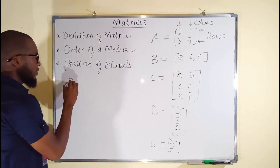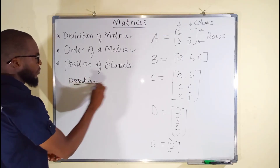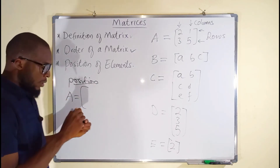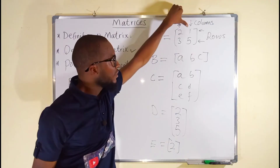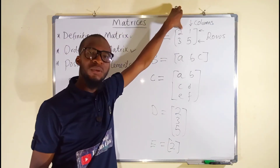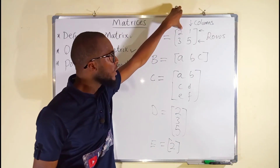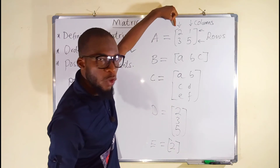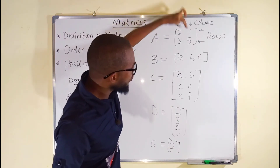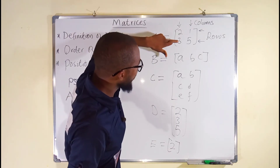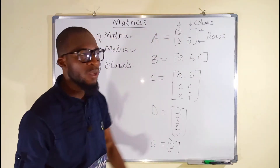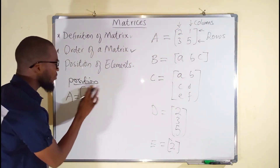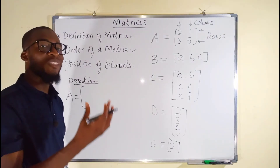Let's consider matrix A, which has 4 elements. The element 2 is from the first row and first column. The element 1 is from the first row, second column. The element 3 is from the second row, first column. The element 5 is from the second row, second column. This position can be written in subscript form.